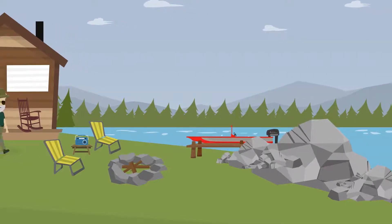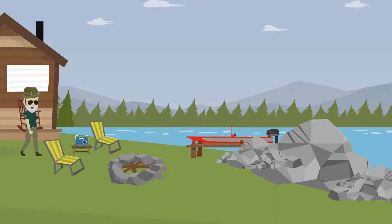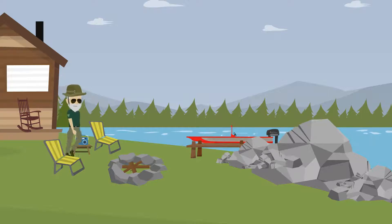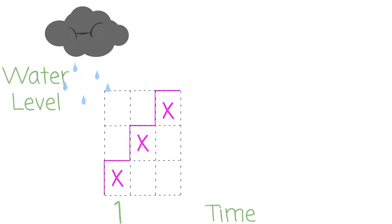A proportional relationship simply means that the ratio between two variables stays constant. For every hour it rains, the lake will rise 2 inches. That is a ratio of 2 to 1. In a proportional relationship, that ratio remains constant.